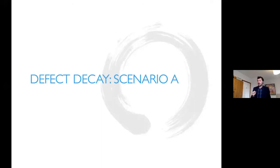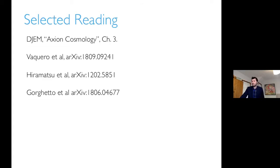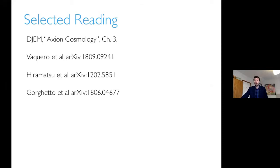In some sense these are like two halves of theory space. What we're going to talk about today is scenario A — where we have the inhomogeneous distribution of axions at early times — which leads to topological defects and then decay. There's only a short discussion of this in my review, with much better discussions in these numerical papers, because this is not a problem that can be solved analytically.